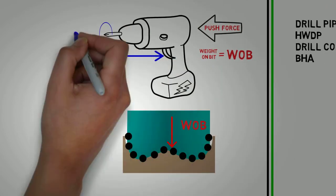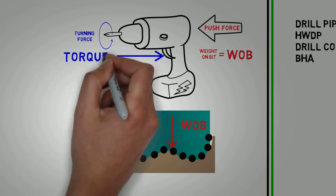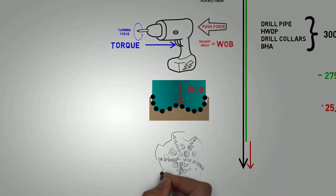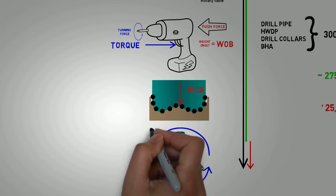Just pushing on a drill doesn't make a hole. You have to pull the trigger to turn the bit. The force that causes the bit and drill string to turn is called torque.